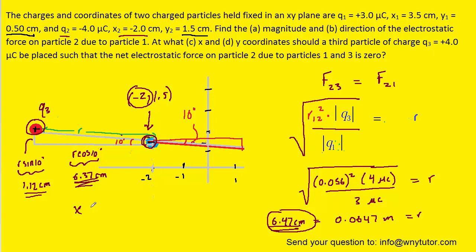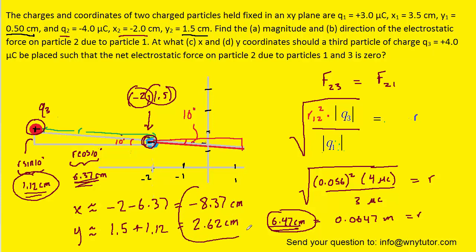So the x-coordinate is going to become the negative 2 of charge Q2 minus the 6.37 that we just found. So we're going to get approximately negative 8.37 for the x-coordinate. And then the y-coordinate all we need to do is move upward along the y-axis to get to Q3. And we're going to move upward by this much 1.12. So we'll take the y-coordinate of Q2 and add to it the 1.12 centimeters that we just found. And we get approximately 2.62 centimeters. So that would represent the x and y coordinates of Q3.